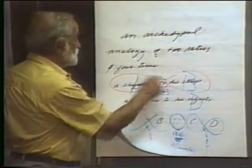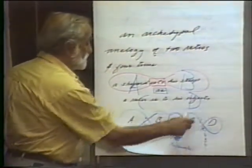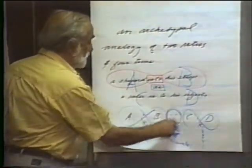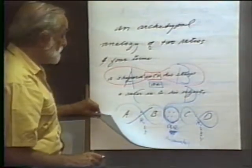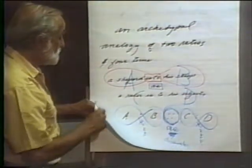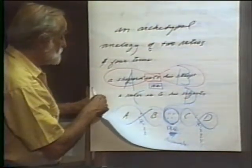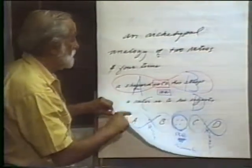Again: two ratios. A is to B, C is to D, governed by the most important term — 'as' — which establishes there must be a relationship between the two of similarity.